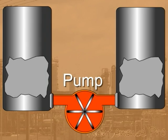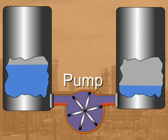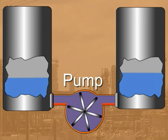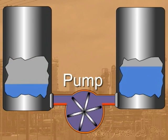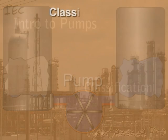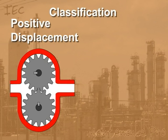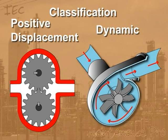A pump is a device used to move liquids or slurries. A pump moves liquids from lower pressure to higher pressure and overcomes the difference in pressure by adding energy to the system. In general, pumps can be classified as either positive displacement or dynamic.